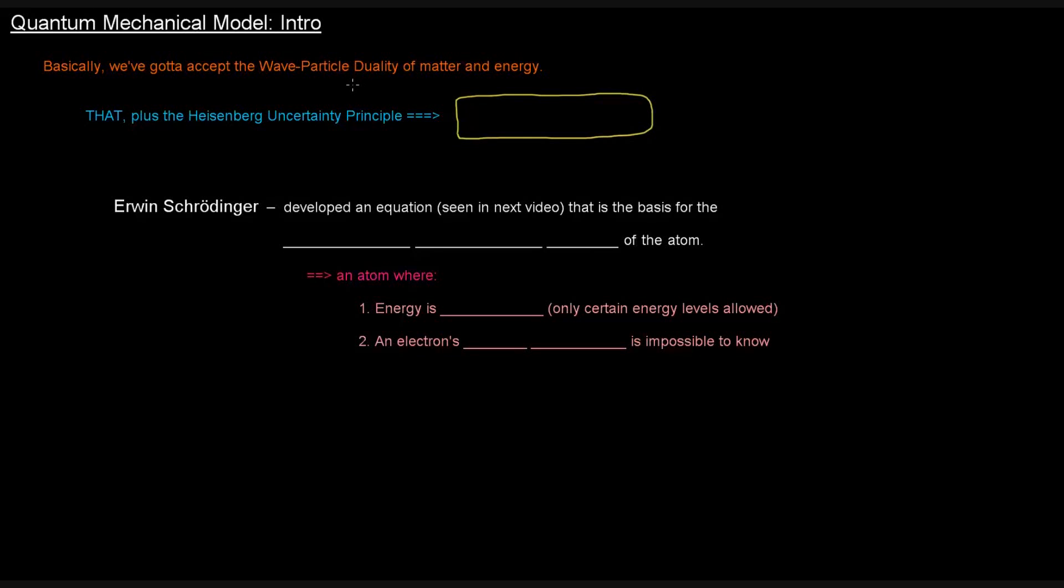In the last video series, we talked about the wave-particle duality of matter and energy and how that leads to quantum mechanics. Basically, we have to accept the wave-particle duality of matter and energy, along with Heisenberg's Uncertainty Principle. If you combine those two concepts together, you have quantum mechanics.